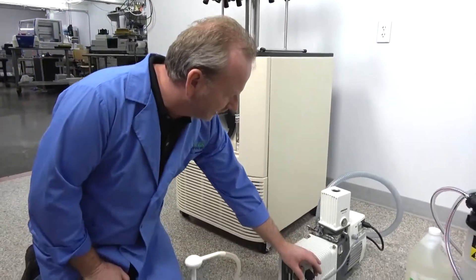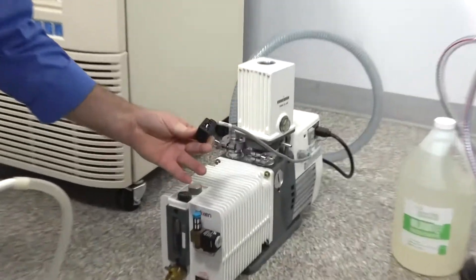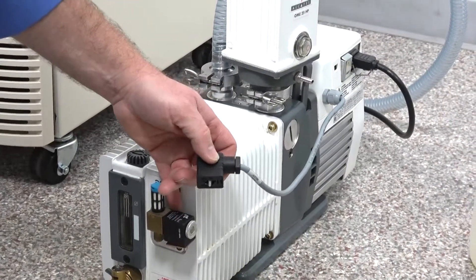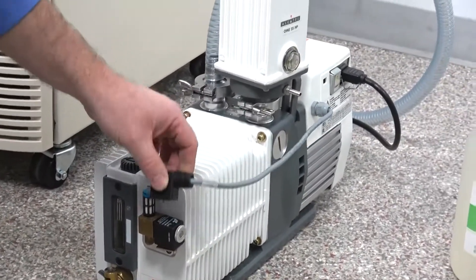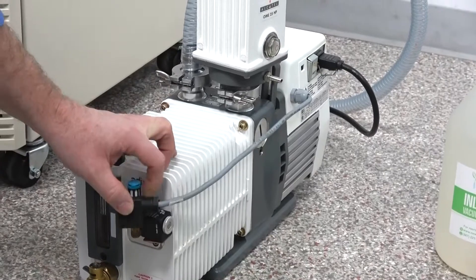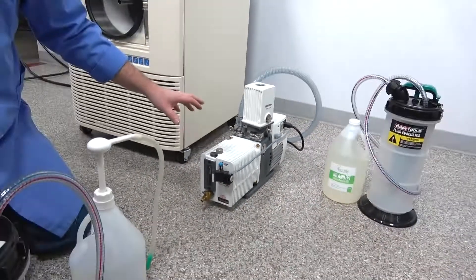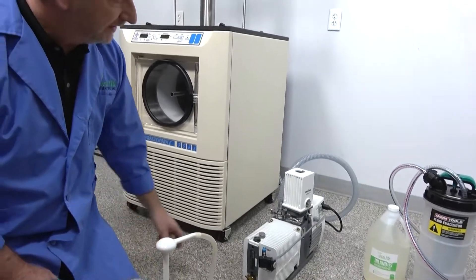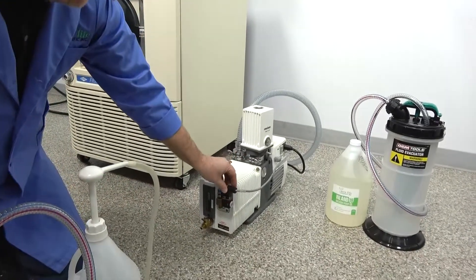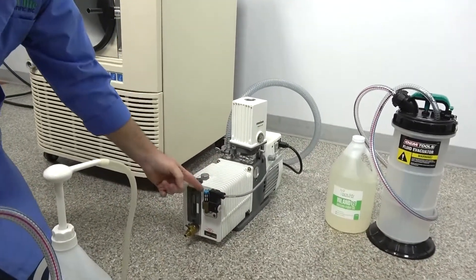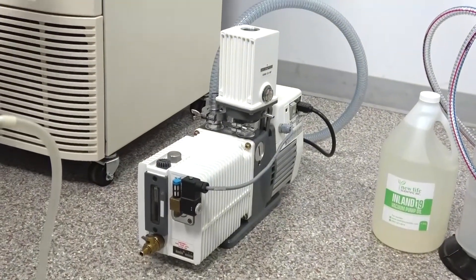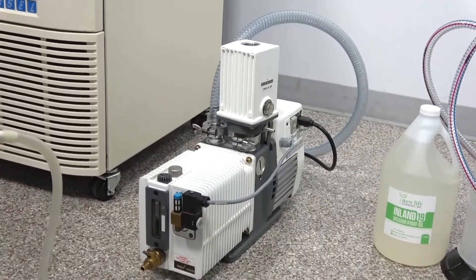But the first thing I'm going to point out to you before we do the oil change is this right here. This is a power that actually powers a solenoid right here that actually allows this pump to do a ballast bypass. In other words, if this is unplugged, this will pull a deeper vacuum and it won't gurgle out excess moisture. If it is plugged in, if we plug this in, you just heard it kick in. Now it's gurgling out moisture that possibly could bypass and it won't pull quite as deep of a vacuum.